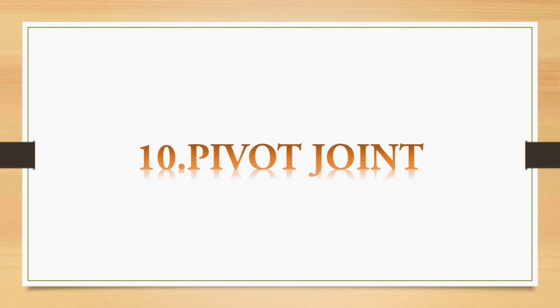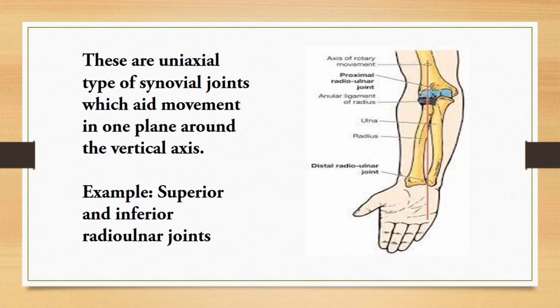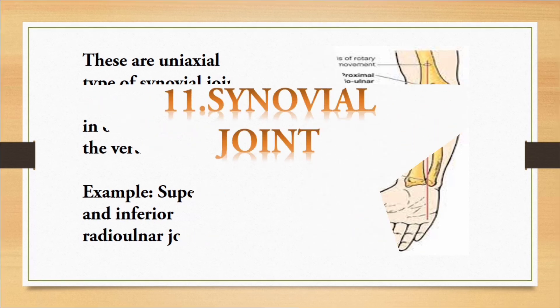Tenth question: pivot joint. These are uniaxial type of synovial joints which aid movement in one plane around the vertical axis. Example: superior and inferior radio-ulnar joints. Do draw this diagram and mark the superior and inferior radio-ulnar joints.